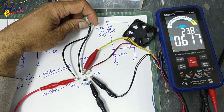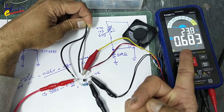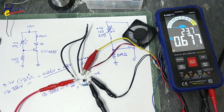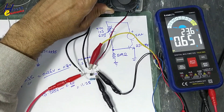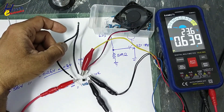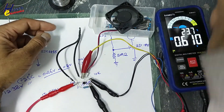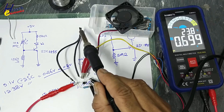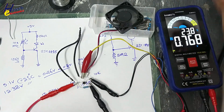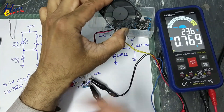If I touch this NTC, the voltage is increasing to 0.68V and the fan turns on at slow speed. The fan is now at slow speed. If I heat it up further, the voltage rises to 0.76V, then 0.77V, and the fan is now at high speed.